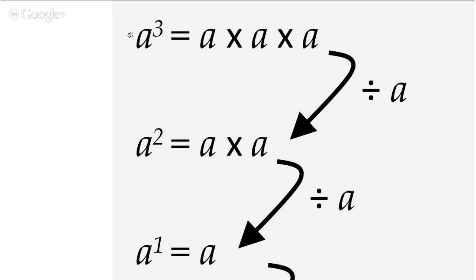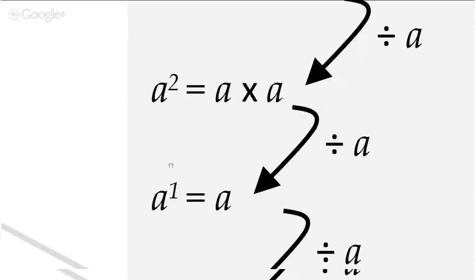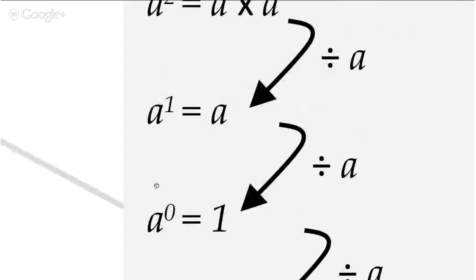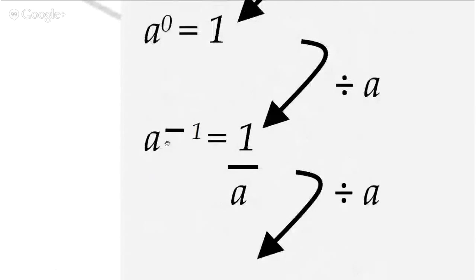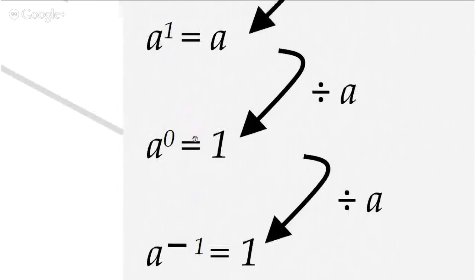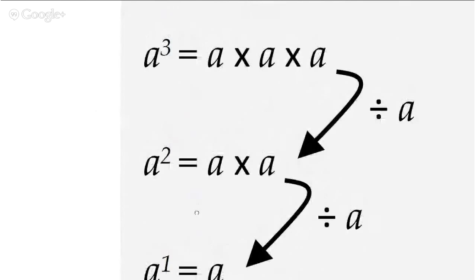This is another video explaining the proofs of the index rules. In this video I'm going to explain how a to the power of zero equals one, and how negative powers are basically reciprocals.